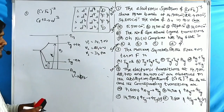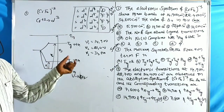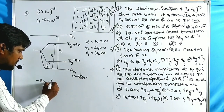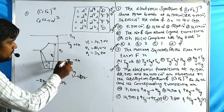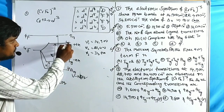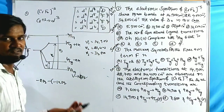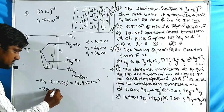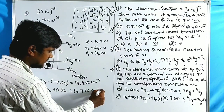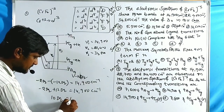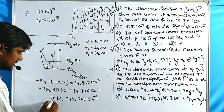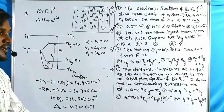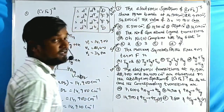From the first transition: (−2Dq) − (−12Dq) = 10Dq = 14,900 cm⁻¹. Since 10Dq = ΔO, therefore ΔO = 14,900 cm⁻¹. Option B is correct. Key trick: for f-term diagrams similar to octahedral splitting, the first transition directly equals the ΔO value.